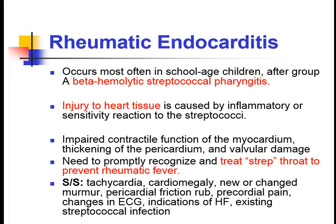In rheumatic endocarditis, the pathophysiology includes impaired contractile function of the myocardium, thickening of the pericardium, and valve damage. It is necessary to properly recognize and treat strep throat to prevent rheumatic fever and endocarditis. A throat infection, if left untreated and recurring with on-and-off fever, will travel and affect the heart.